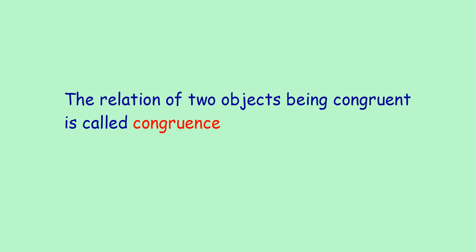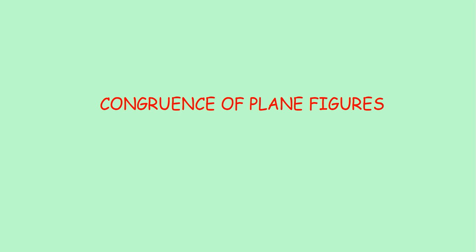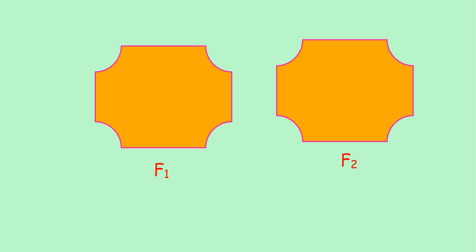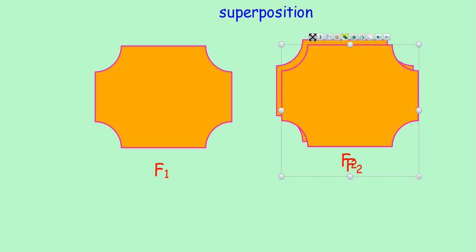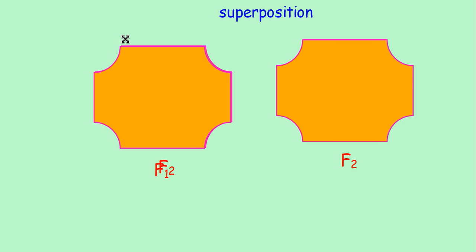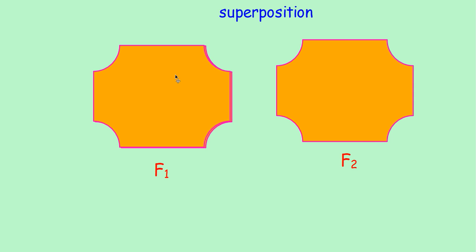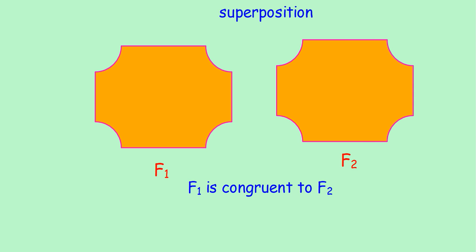Now we can discuss the congruence of plane figures. Let me take two plane figures. Here you have two figures, F1 and F2. Are they congruent? You can use a method of superposition — take a copy of one figure and keep it on the other. If it exactly covers, we can say these two are congruent. Here you can see figure F2 covers exactly over F1. So we can say F1 is congruent to F2. This symbol is used for congruence of two objects or figures.